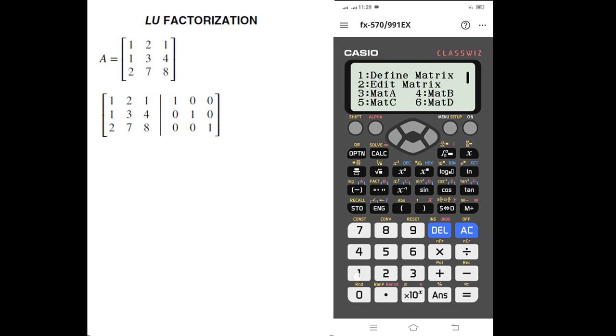Next, I will define the matrix again, which will be matrix B, again 3x3. Now we will write the values: 1, 3, 4, 0, 1, 0, 1, and 0.